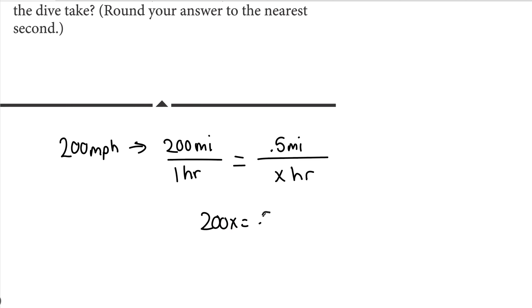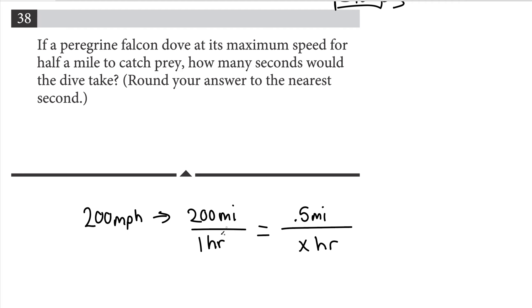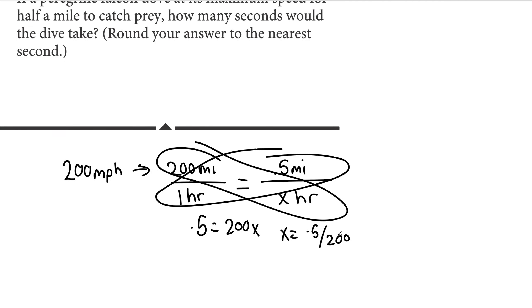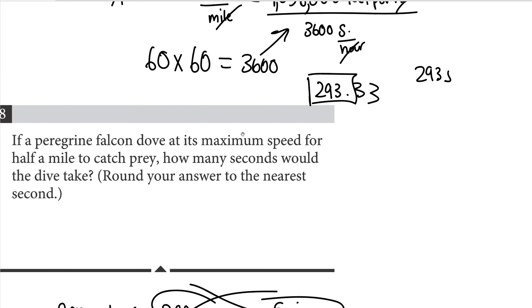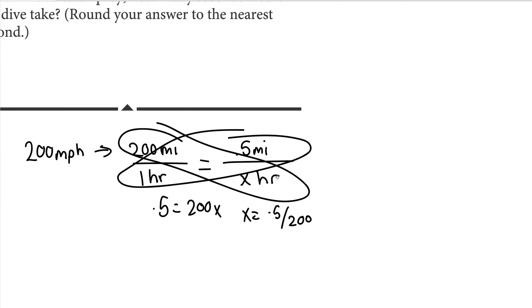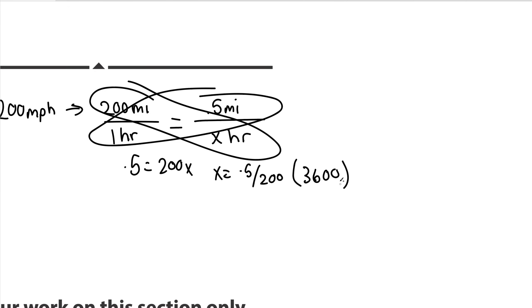So 200x equals 0.5 using cross multiplication. So we have 0.5 equals 200x, and x equals 0.5 over 200. Well we're not done with that because that's only how many hours it would take, and we need to still multiply by the number of seconds in an hour. And remember that we solved for it before, 3600. So I'm just going to use the same factor times 3600 at the end. If we just plug this into a calculator, what we should get is 0.5 over 200 times 3600, and that would be nine seconds.